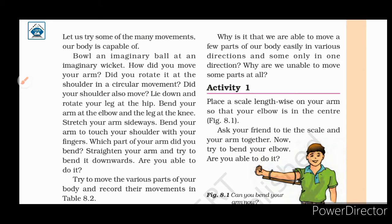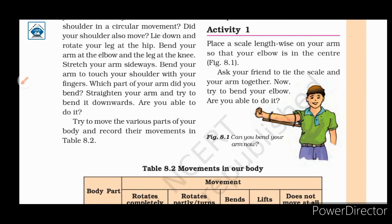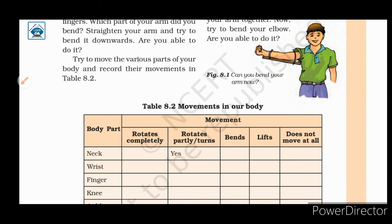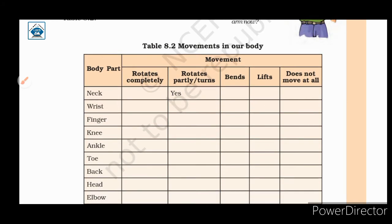Stretch your arm sideways and bend your arm to touch your shoulder with your fingers. Which part of your arm did you bend? We have to bend from the elbow to touch the shoulder. Straighten your arm and try to bend it downwards — are you able to do it? Try to move the various parts of your body and record the movement in Table 8.2.